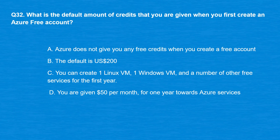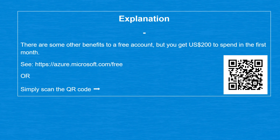Question 32: What is the default amount of credits you're given when you first create an Azure free account? Option A: Azure does not give you any free credits. Option B: The default is $200 USD. Option C: You can create one Linux VM, one Windows VM, and other free services for the first year. Option D: You are given $50 per month for one year. The correct answer is Option B, $200 USD. You get $200 to spend in the first month, along with some other free account benefits.